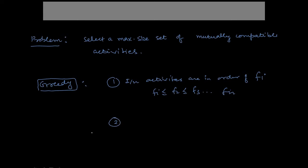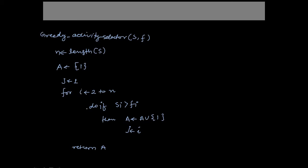If activities are not sorted by finish time, we can sort them in O(n log n) time. The algorithm takes two array inputs: s, the start time array, and f, the finish time array, sorted according to finish times. We write the procedure Greedy-Activity-Selector, passing these two arrays.